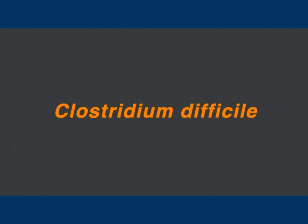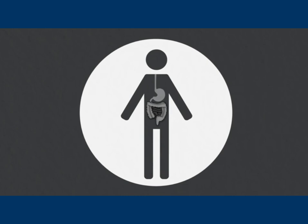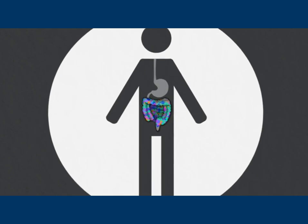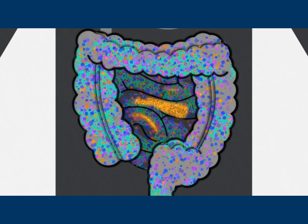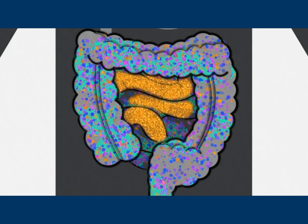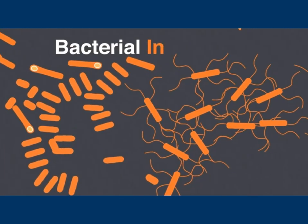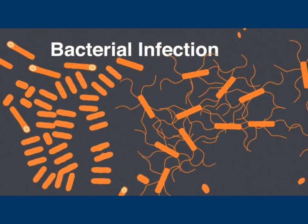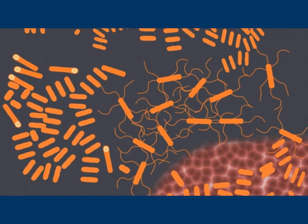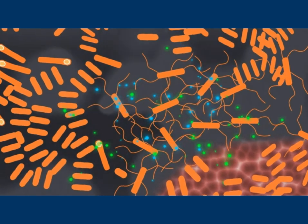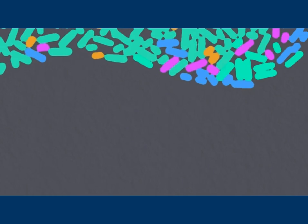The human digestive tract is home to an estimated 500 to 1,000 different species of microorganisms, most of which are harmless or even helpful. But if something upsets the balance of these bacteria — such as treatment with antibiotics or cancer chemotherapy — certain harmful organisms can multiply out of control and cause illness. Clostridium difficile infection (CDI) is a bacterial infection that causes diarrhea, which can sometimes be debilitating, and inflames the colon, causing colitis. When the gut's beneficial bowel bacteria are disrupted, C. diff can multiply, producing toxins that damage the bowel and cause intestinal symptoms, and in very severe cases can result in death.